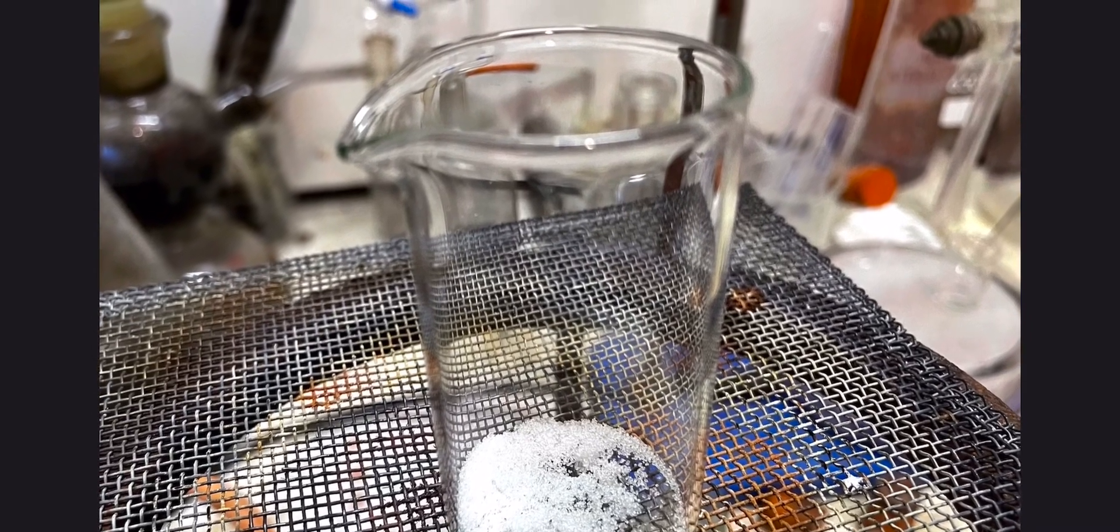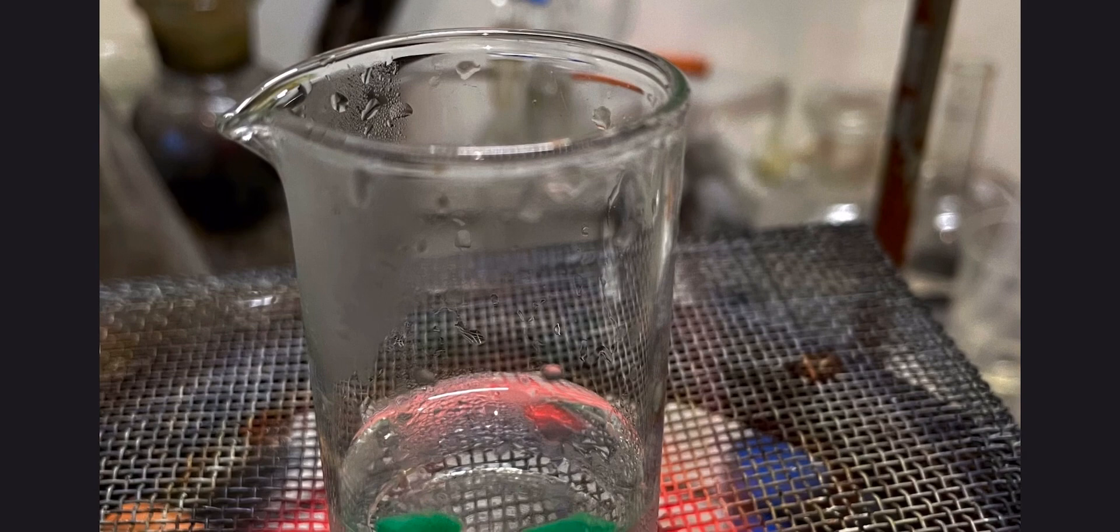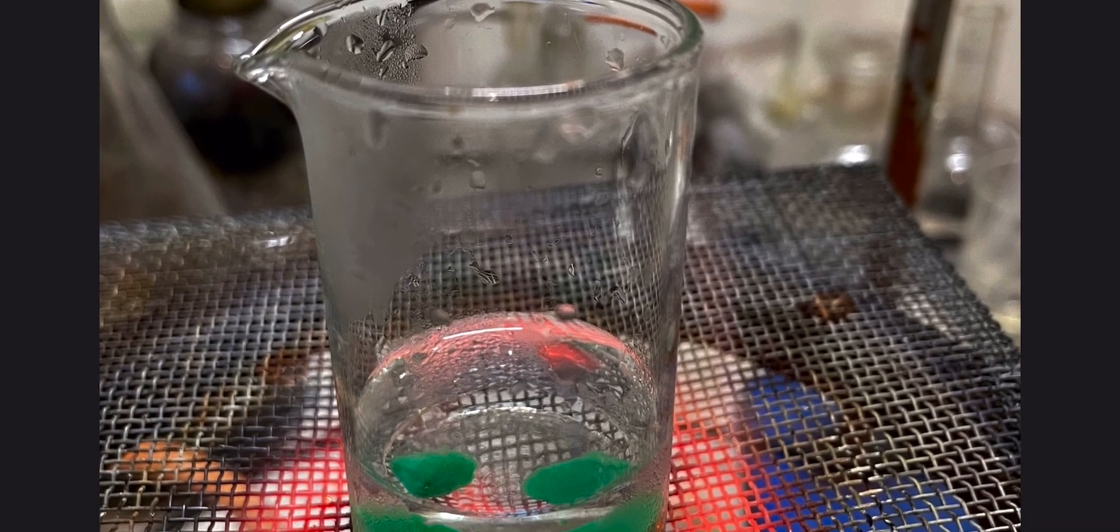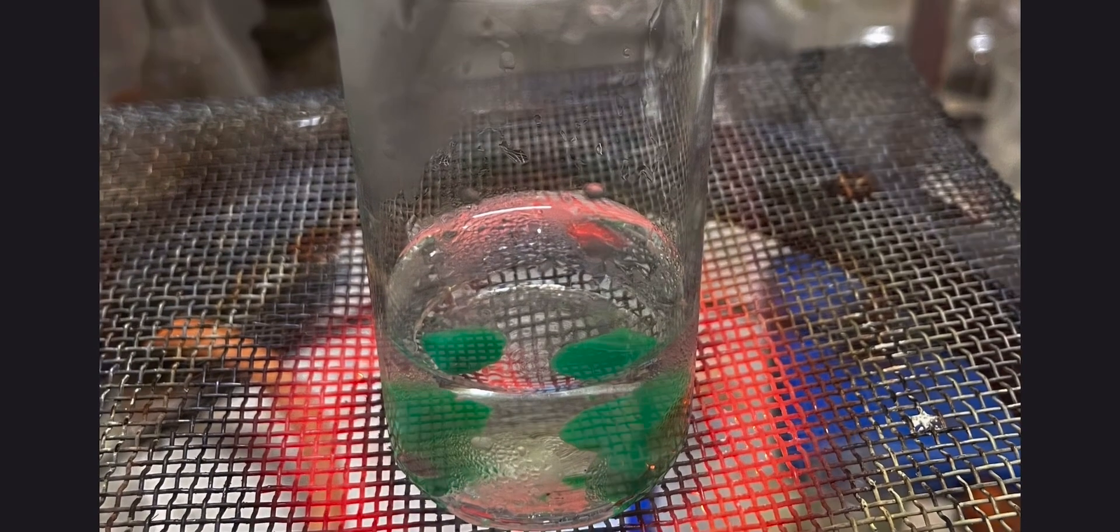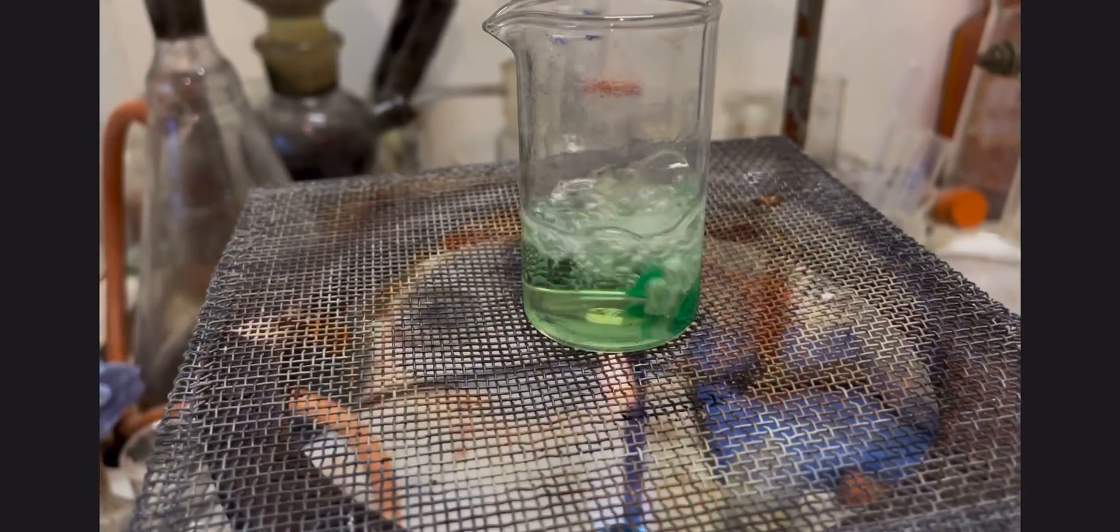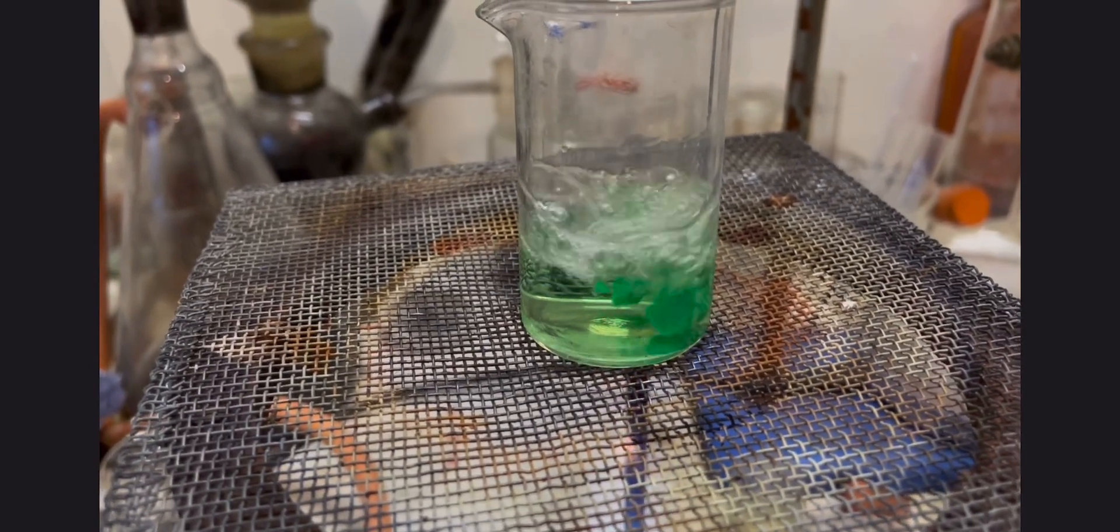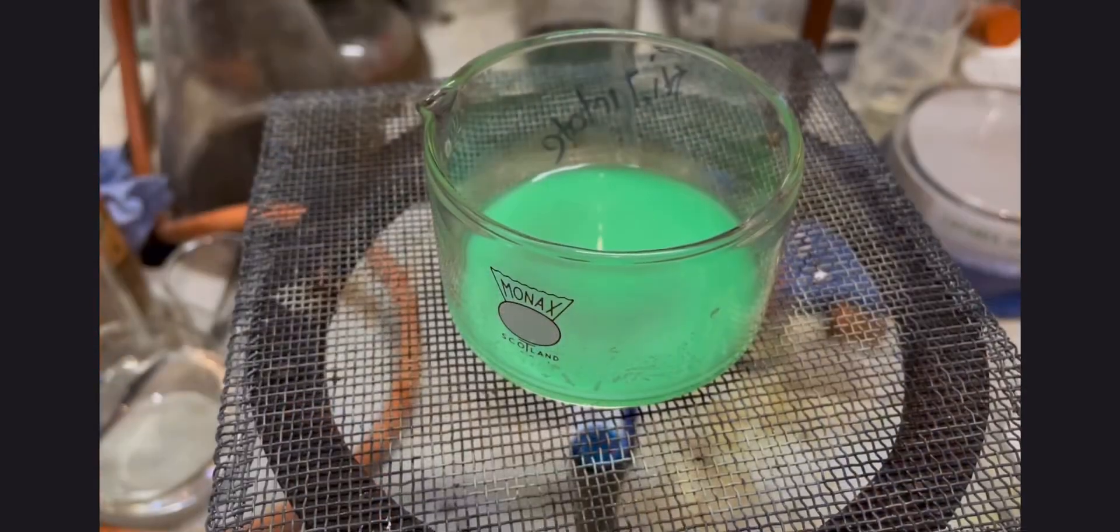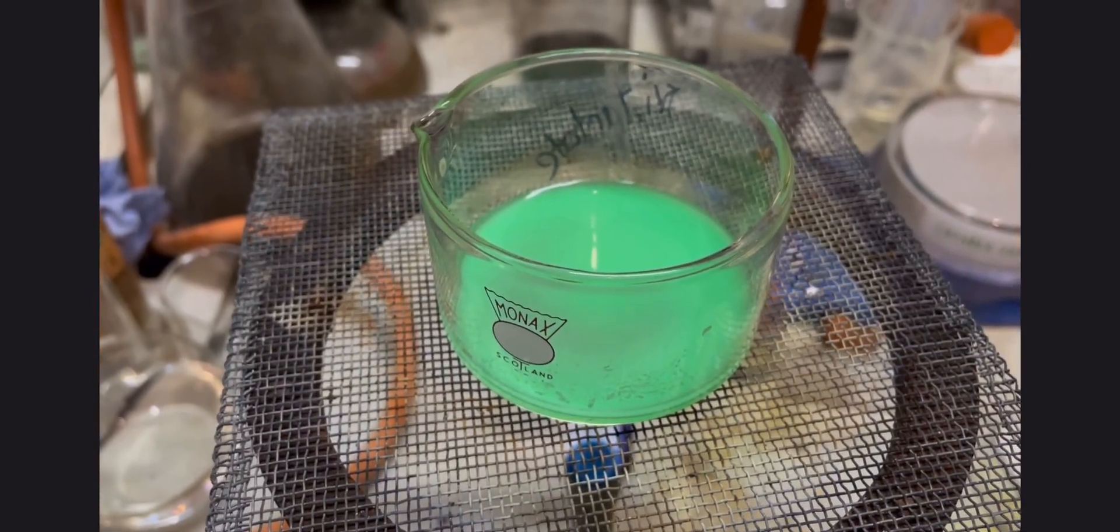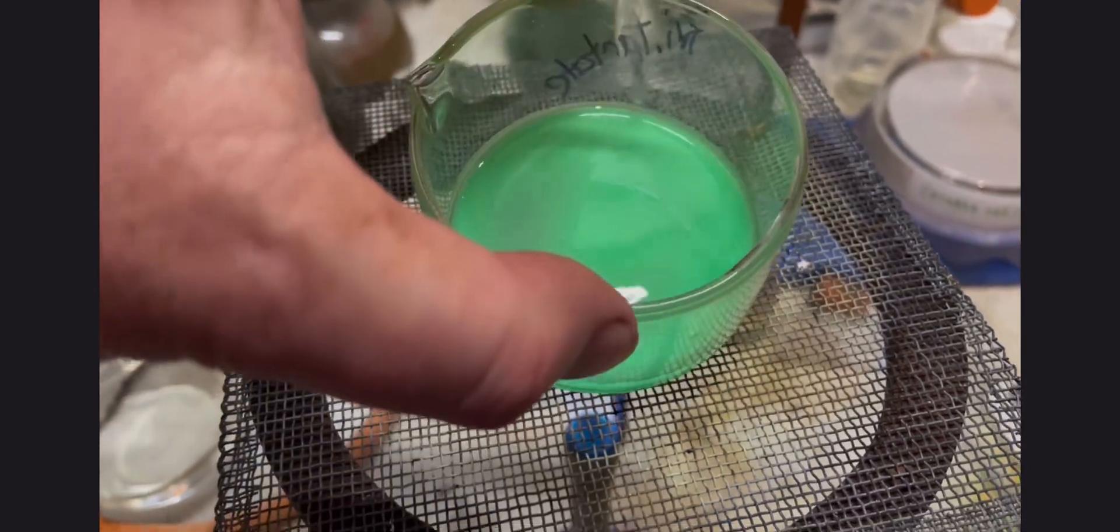We're just going to use the little 50 ml beaker that Merritt provide and put some tartaric acid into it and then put some of the nickel carbonate into it to dissolve to hopefully form nickel tartrate. We'll give it a bit of activation energy just to help it dissolve.